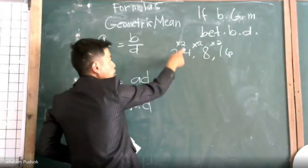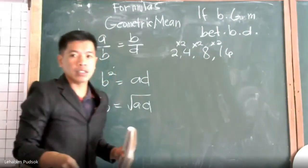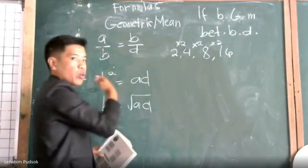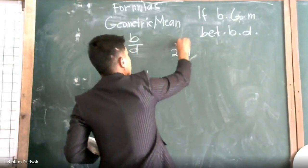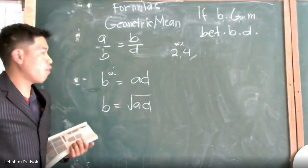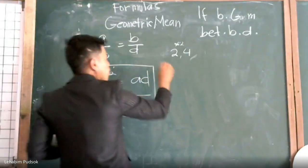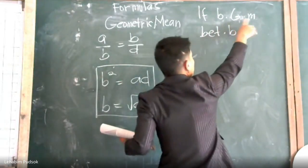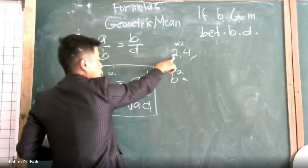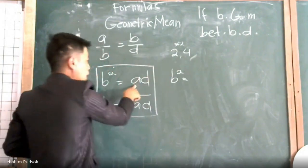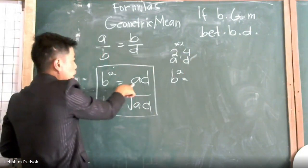Or if you are dividing: 4 divided by 2 is 2, 8 divided by 2 is 4, 16 divided by 2 is 8. So vice versa — multiplying going to the right, dividing going to the left. So this is a geometric sequence. Now, if B is the geometric mean, B raised to 2 is equal to A times D.